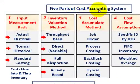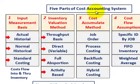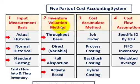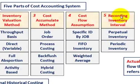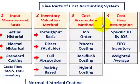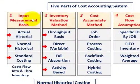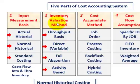We're going to be going over an overview of our cost accounting system, specifically looking at our inputs and inventory evaluations. A cost accounting system has five different parts: the input measurement basis, the inventory valuation method, cost accumulation methods, cost flow assumptions, and recording our inventory interval. We're going to focus on the input measurement basis and inventory valuation methods.